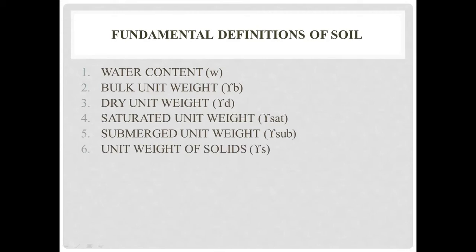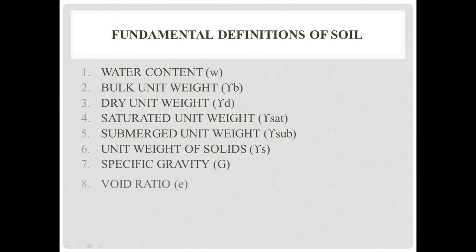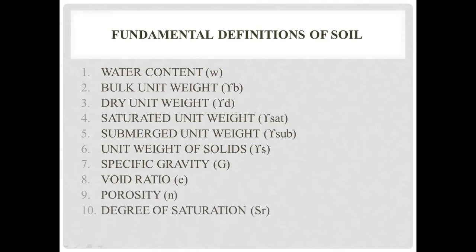When you talk about unit weight of solids, here you are considering total weight of only soil solids by volume of soil solids, and not the total volume. Specific gravity, which is familiar to everyone. Void ratio and porosity. And last, degree of saturation - for fully saturated soil, degree of saturation will be equal to 1, that is 100%, and for dry soil it will be 0.